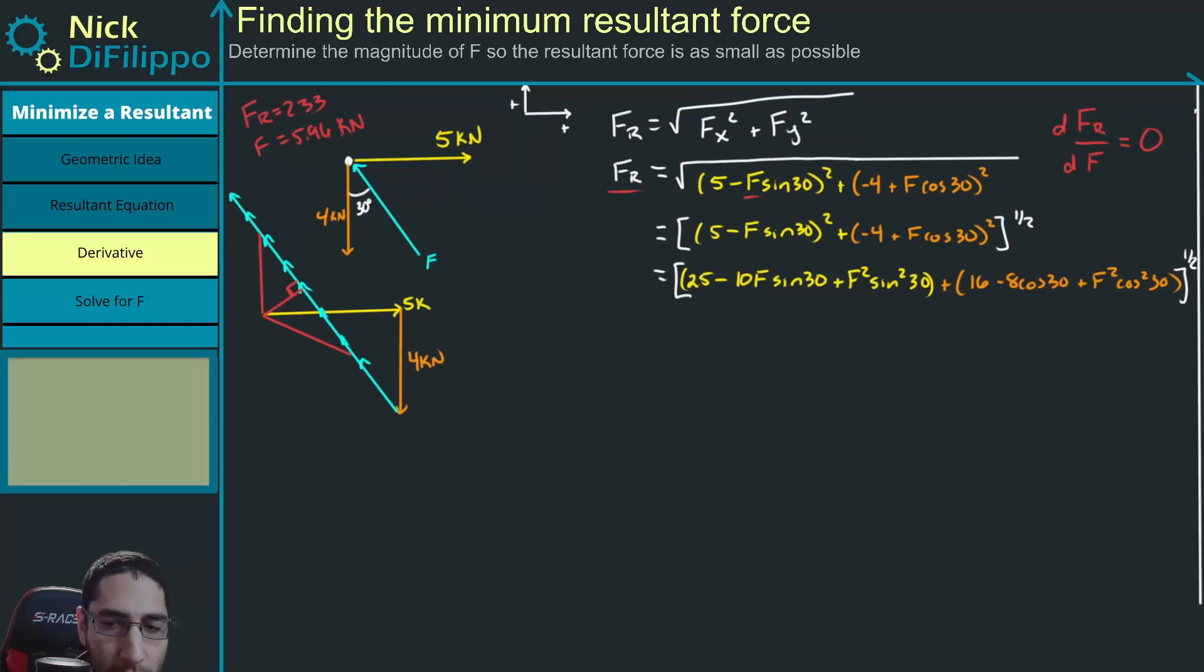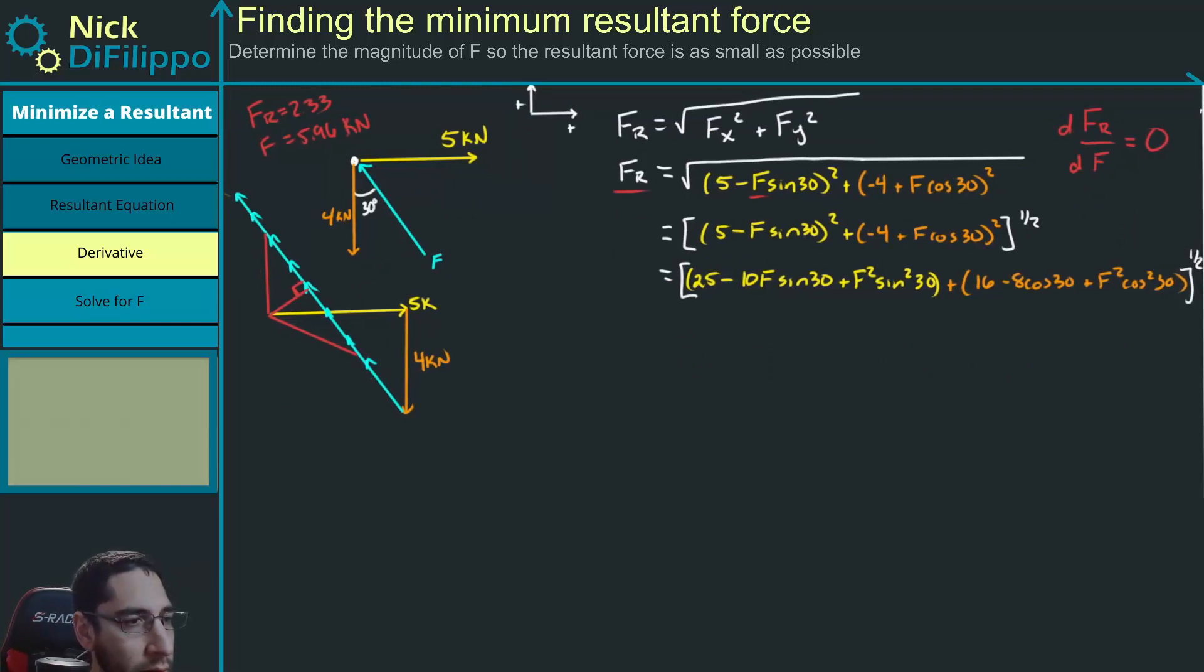Move it over just a little bit. So now we can go and we can combine this. This right here is a minus 5. This right here, we need to bring the calculator up. So minus 8 times the cosine of 30. It's going to be minus 6, we'll call it minus 6.93. And I lost an F on this one. So this needs an F.